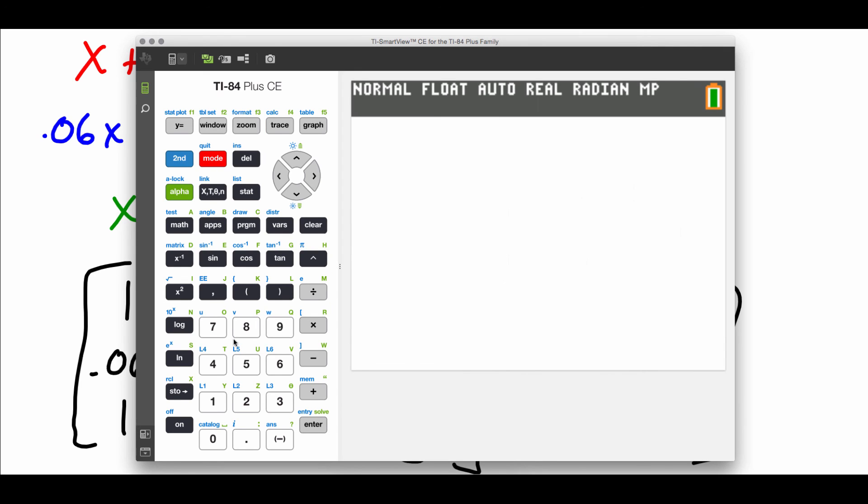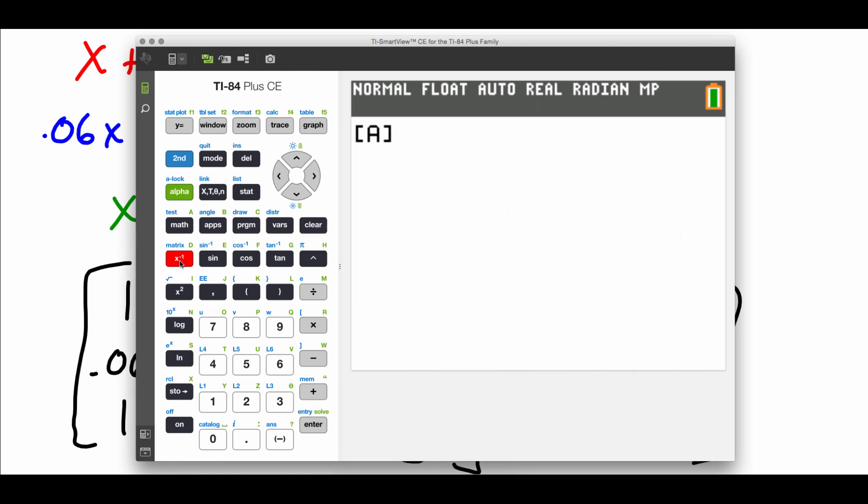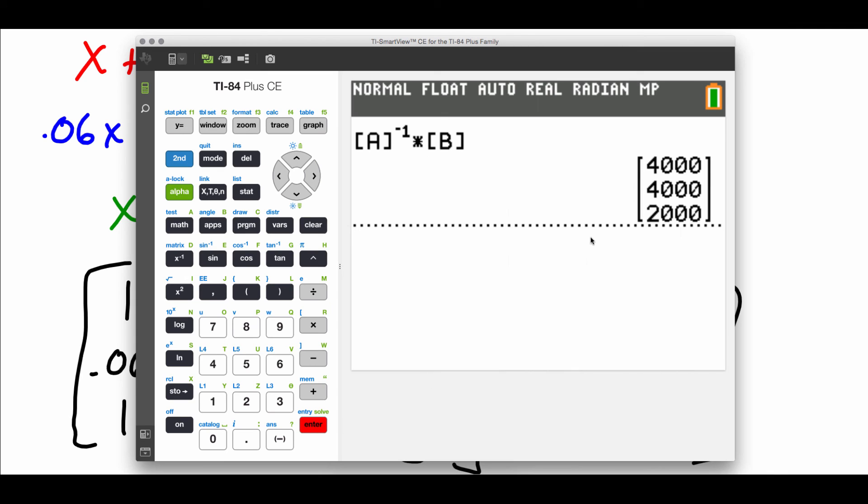So now if we quit out of there, remember we want to do the inverse of matrix A. So we'll grab matrix A, hit that inverse button, times second matrix B, hit enter, and there's our dollar amounts. We'll invest $4,000 in those AAA bonds, $4,000 in those AA bonds, and $2,000 in those B bonds.